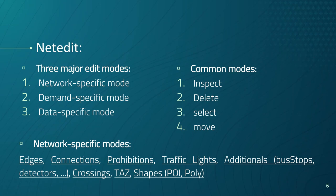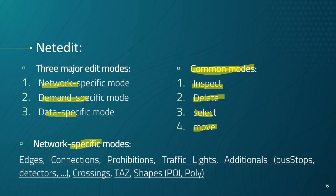NetEdit can be switched between three major edit modes, also called super modes: editing network-related objects, traffic-related objects, and data objects. Each super mode has a number of sub-modes. Some are common to all super modes and some are specific. The common modes are inspecting, deleting, selecting, or moving objects. The network-specific modes include the edge mode for creating edges or connections, prohibitions, traffic lights, additionals, and crossings.